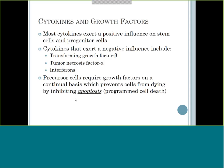The most important thing to remember from this slide: precursor cells require growth factors on a continual basis, which helps prevent the cell from dying by inhibiting apoptosis. If you have these cytokines helping them grow, everything's good. The minute you do not have a growth factor, that cell will program itself to die off. Apoptosis is programmed cell death - so if there is no growth factor to help it keep going, it's going to kill itself off.